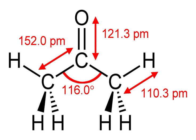Acetone is miscible with water and serves as an important solvent in its own right, typically for cleaning purposes in laboratories. About 6.7 million tons were produced worldwide in 2010, mainly for use as a solvent and in production of methyl methacrylate and bisphenol A. It is a common building block in organic chemistry. Familiar household uses of acetone are as the active ingredient in nail polish remover and as paint thinner.